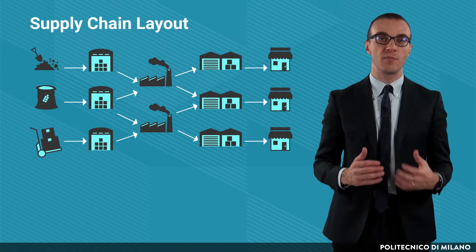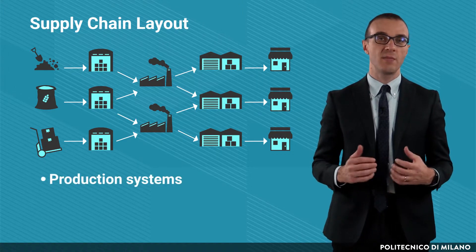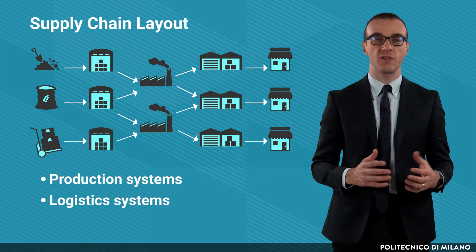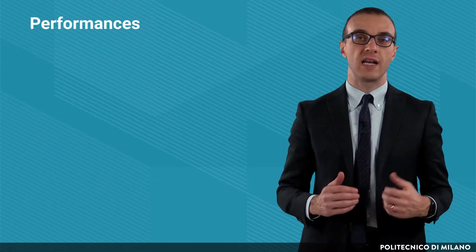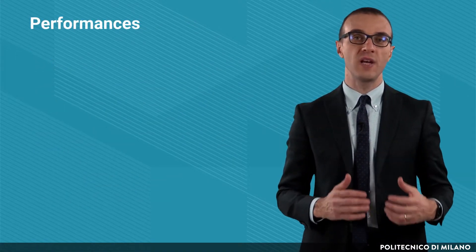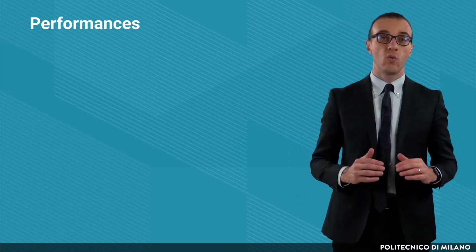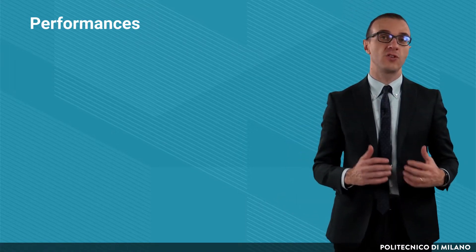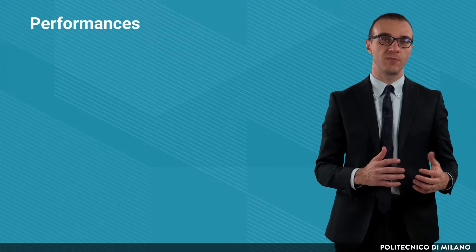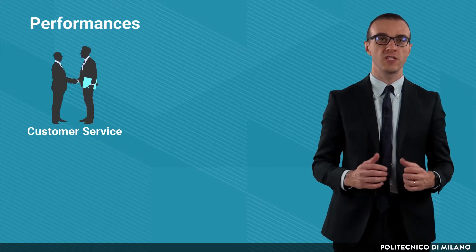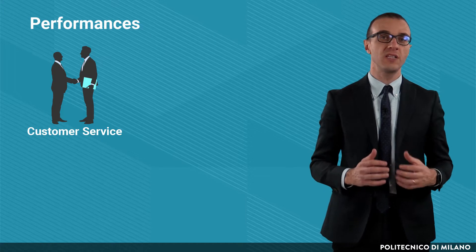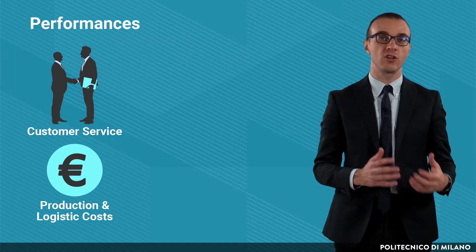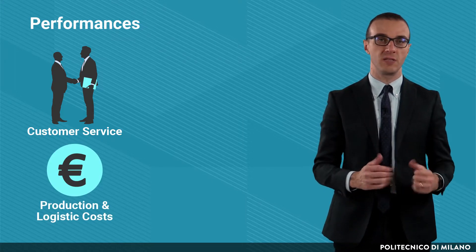We will see the main typologies of production systems and the main typologies of distribution systems. We will then analyze the performances of a company related to the production and logistics systems. We will assume both an external perspective, thus dealing with the customer service, and an internal perspective, considering instead the logistics and production costs as well as the productivity.